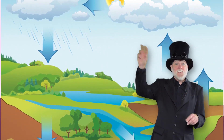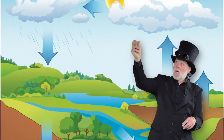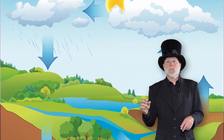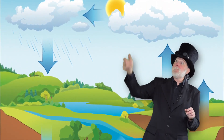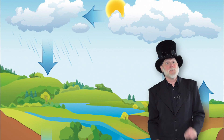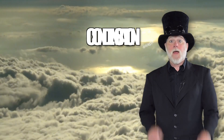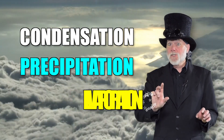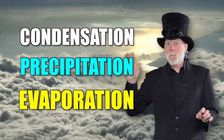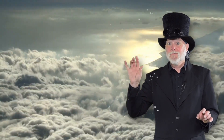Water condenses in the clouds, then precipitates down to the earth, then evaporates back up to the clouds again. That's condensation, precipitation, evaporation — a continuous and ongoing cycle that's a natural earth process.